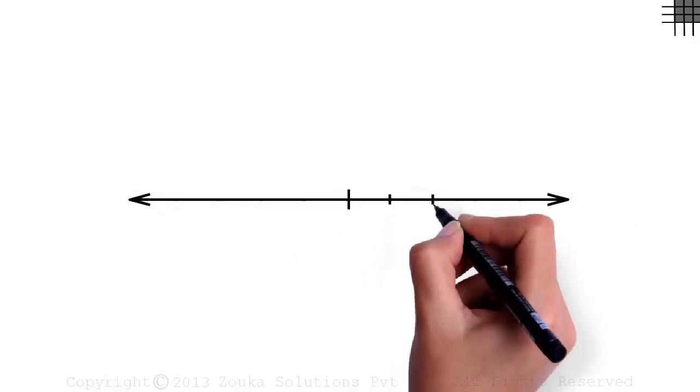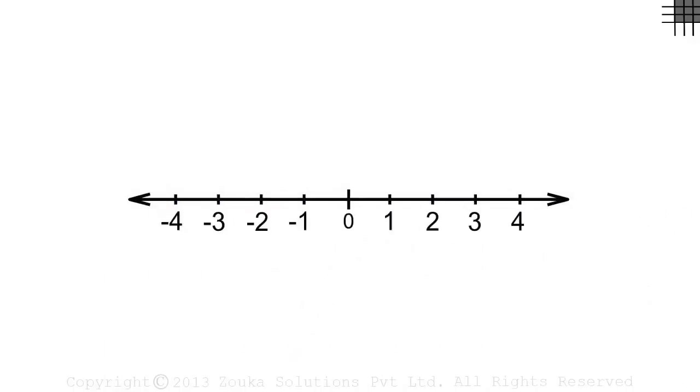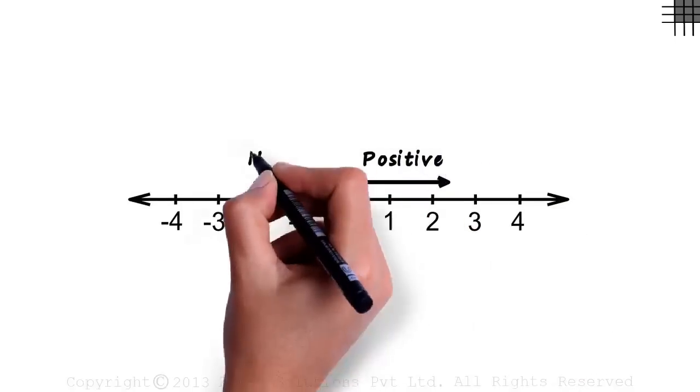All of us know what a number line is and the numbers we see here on the number line are called integers. On the right side of zero we have positive integers and on its left we have negative integers.